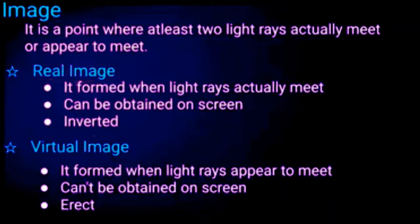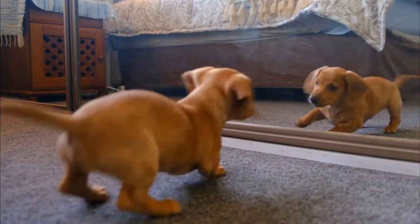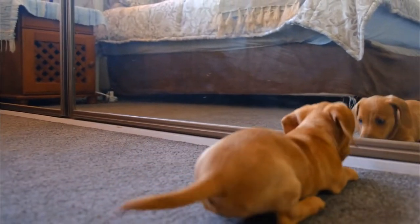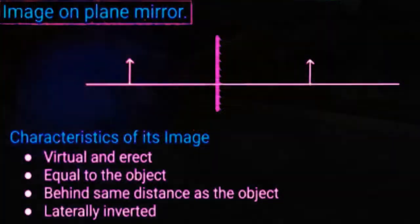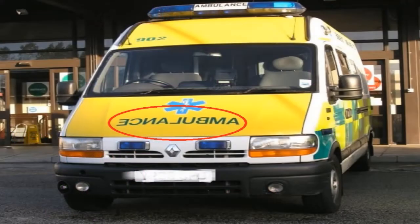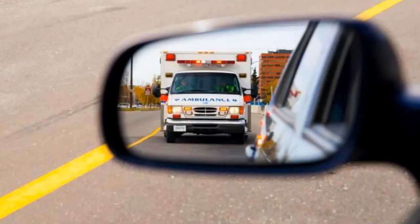Next is the image on a plane mirror. The formation of an image on a plane mirror is always virtual and erect, equal to the object's size, and forms at the same distance behind the mirror. It is always laterally inverted. What do we mean by lateral inversion? See the image of an ambulance — it is written in a laterally inverted manner, so that when a driver sees the word in his rear-view mirror, he can read the actual name.